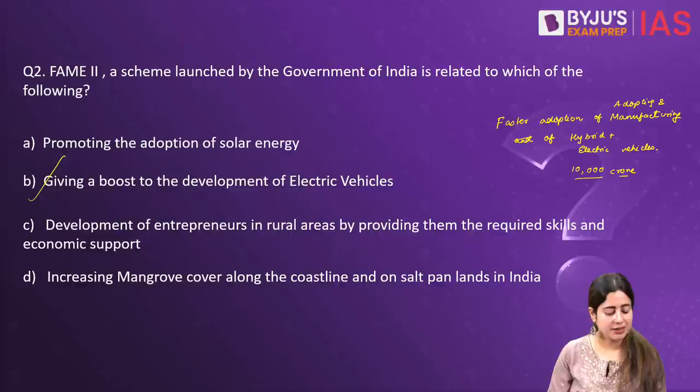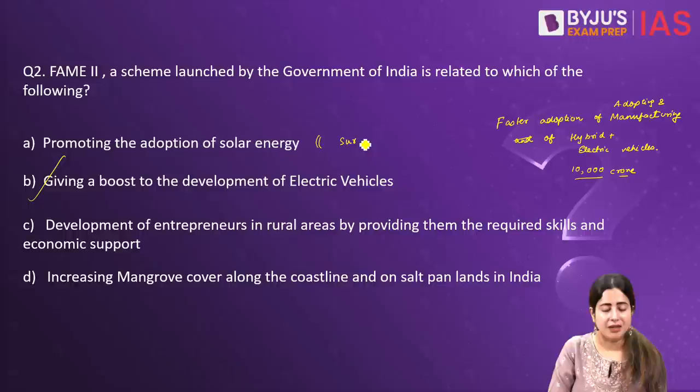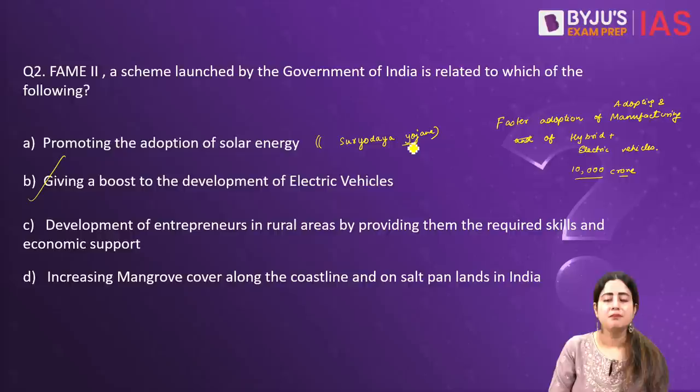Looking at option A — promoting the adoption of solar energy — this could be attributed to yet another scheme of the Government of India which was in news just last week: Pradhan Mantri Surya Uday Yojana, which aims at installing, on a massive scale, solar rooftop panels across India.